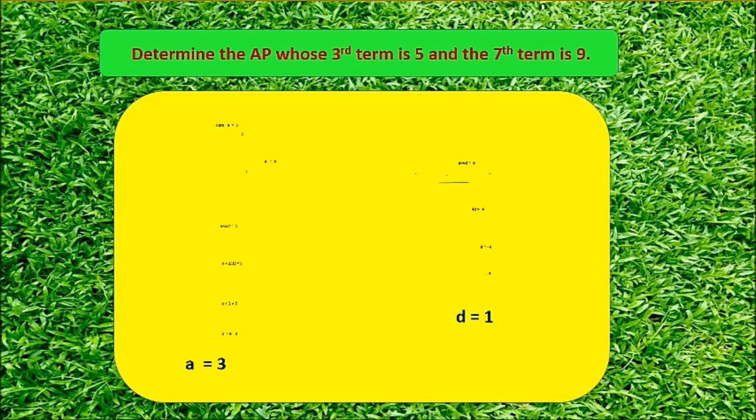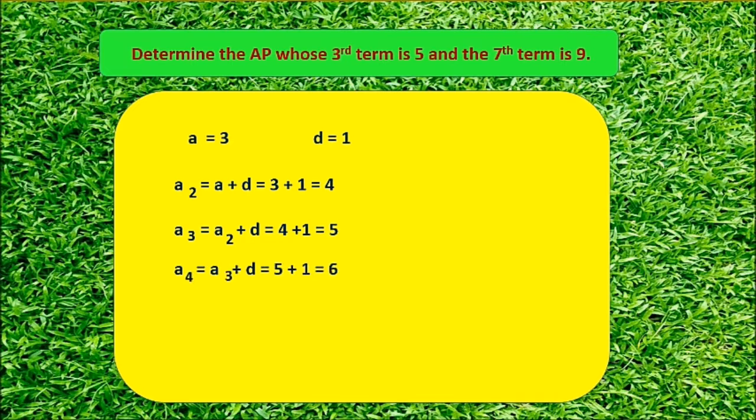With the help of first term A is 3 and common difference D is 1, we get the AP. 2nd term A2 equals A plus D, 3 plus 1 is 4. 3rd term A3 is A2 plus D, 4 plus 1 equals 5. A4 is A3 plus D, 5 plus 1 equals 6. So finally, the AP is 3, 4, 5, 6 and so on.